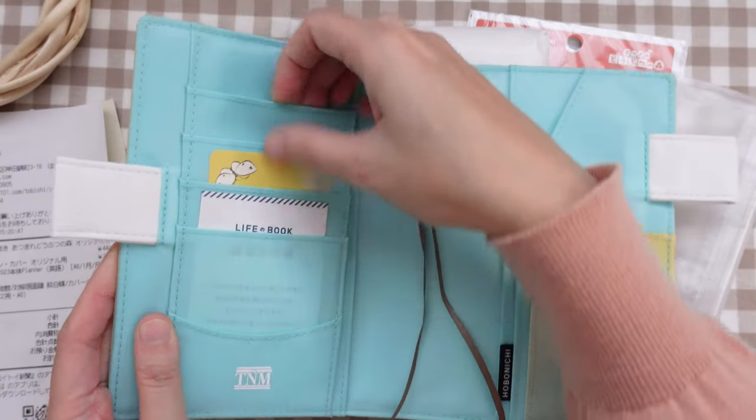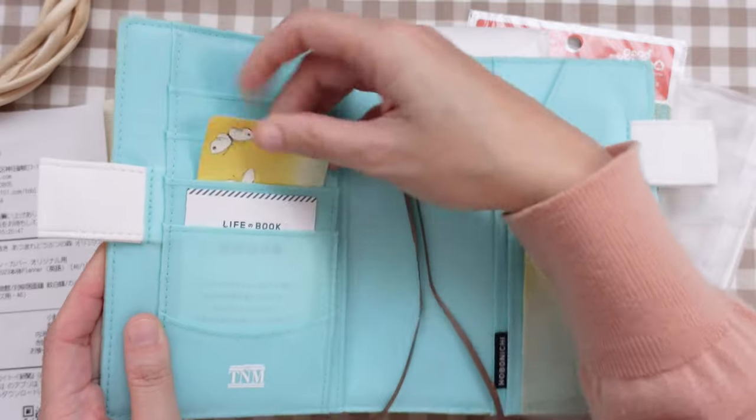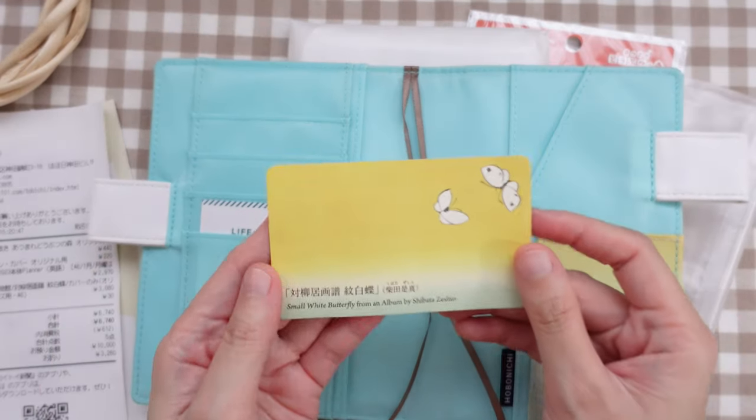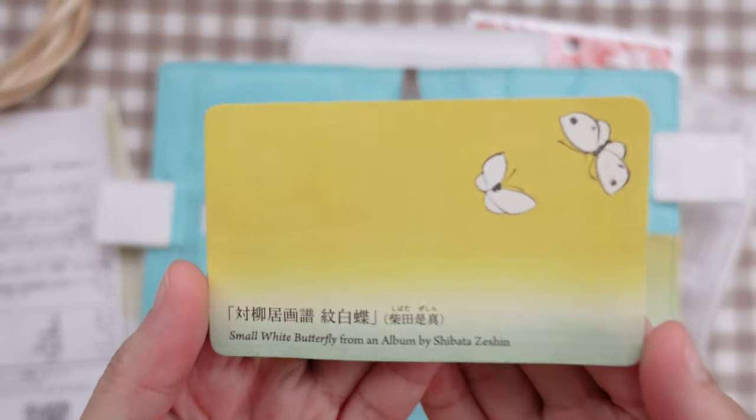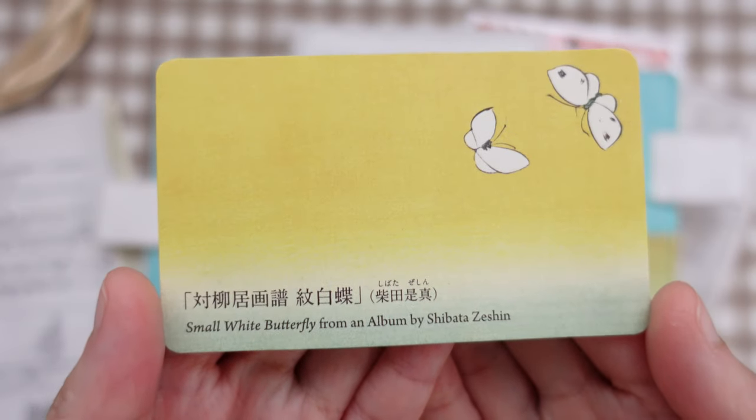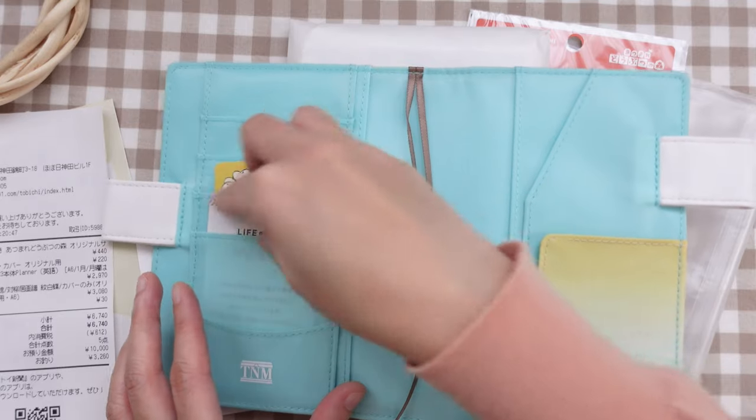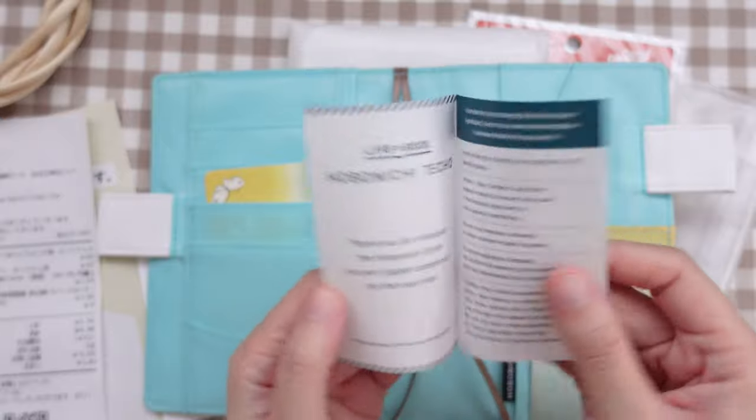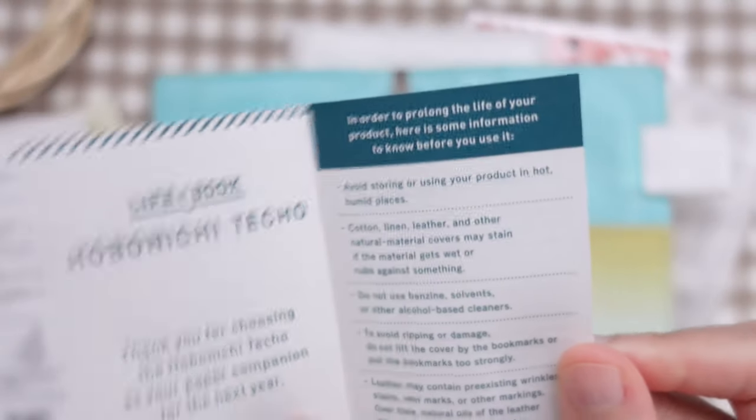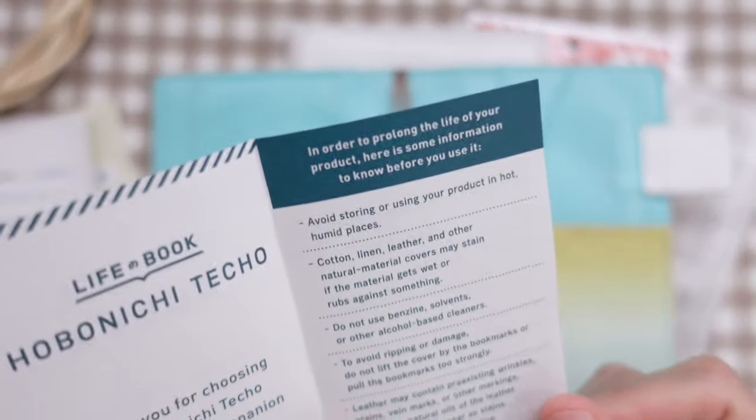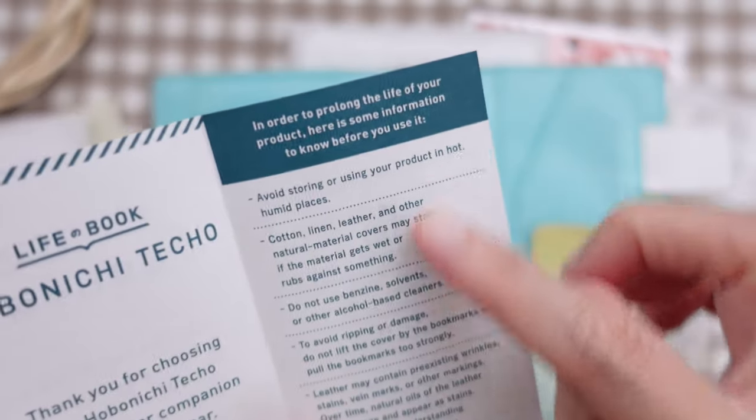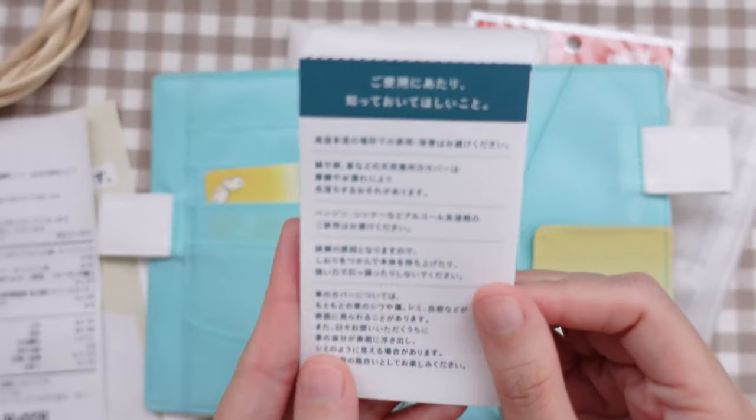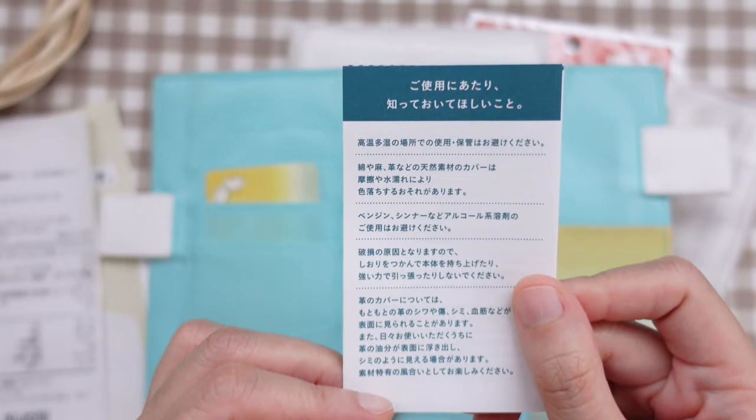And when you open the cover, you have some pockets here. We have the information about the painting I was talking about. So it's a small white butterfly painting and we have the Hobonichi card over here. This is the first time I'm using a Hobonichi Techo, so I really appreciate some special notes here.